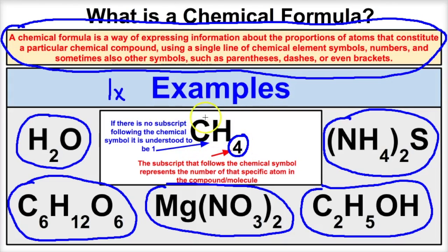So a methane molecule is made up of four hydrogens and one carbon atom. Let's take a look at a few examples and determine how many of each atom there are in a given compound.